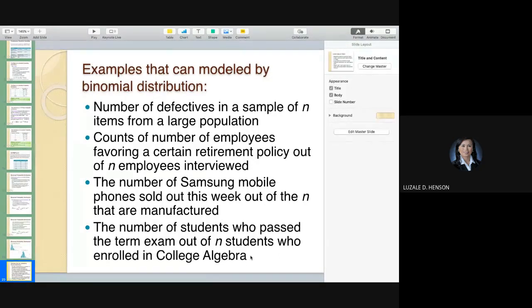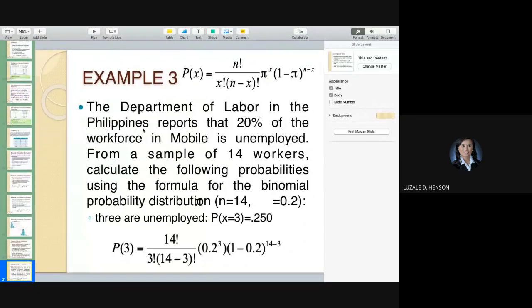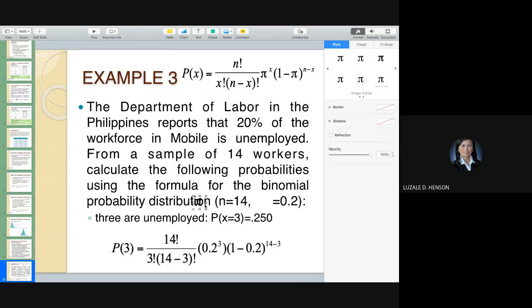Here's an example: The Department of Labor in the Philippines reports that 20% of the workforce in Mobile is unemployed. From a sample of 14 workers, calculate the following probabilities using the formula for the binomial distribution. In this case, our n is equal to 14. Our pi in this case is equal to 0.2, that 0.2 came from 20%.